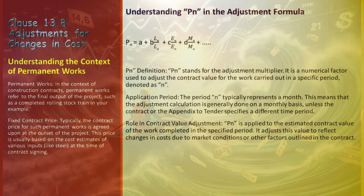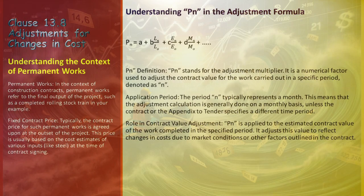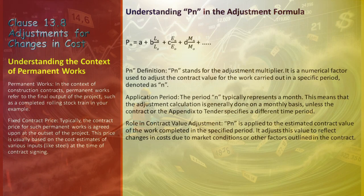The clause implies that different currencies in the contract have individual adjustment formulae, reflecting the unique economic and financial conditions of each currency. This approach is designed to accurately capture variations in factors like inflation and exchange rates for each currency. PN is derived from the formula in Clause 13.8, incorporating various coefficients and cost indices. After determining PN for a given period, it is applied to the value of work completed in that period, leading to an adjusted contract value for that specific time frame.